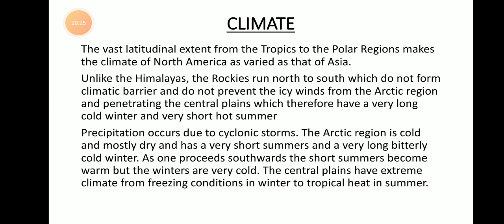Precipitation and rainfall occur due to cyclonic storms. The Arctic region is cold, mostly dry, with very short summers and very long, bitterly cold winters. Since the Arctic is located in the polar region near the North Pole, it is always a very cold and dry area.